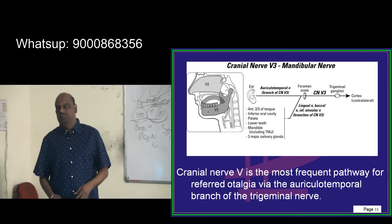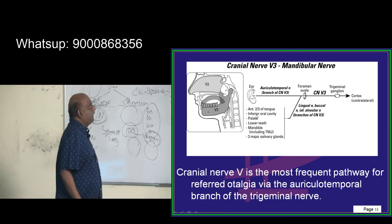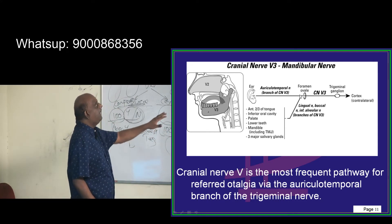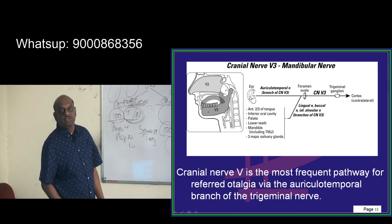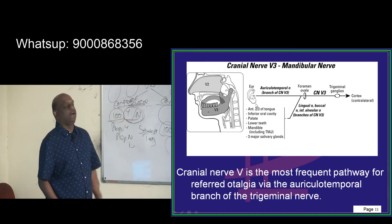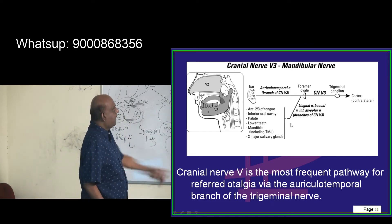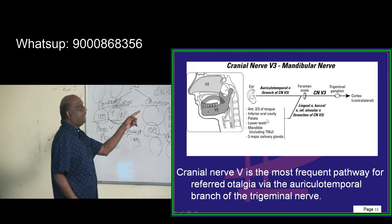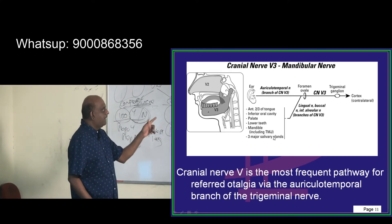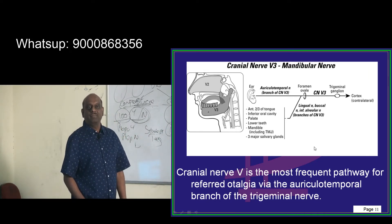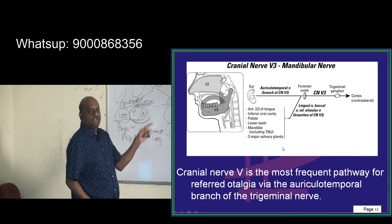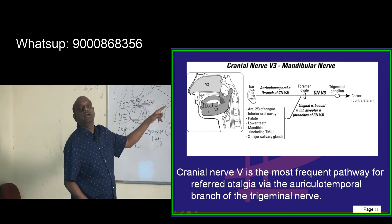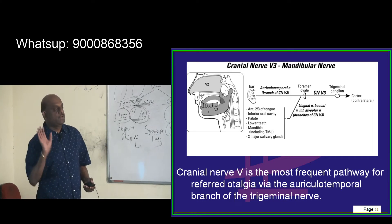The third division of the fifth cranial nerve is called the mandibular nerve. The mandibular nerve goes to the trigeminal ganglion, and one of the branches of the mandibular division is the auriculotemporal nerve — that is the one going to the ear. The fifth cranial nerve also gives rise to the lingual nerve, buccal nerve, and inferior alveolar nerve, which supply the anterior two-thirds of the tongue, the palate, lower teeth, the mandible including the temporomandibular joint, and the three salivary glands. Any inflammation of these structures will lead to referred otalgia mediated by the auriculotemporal nerve. That is the story of the mandibular nerve.